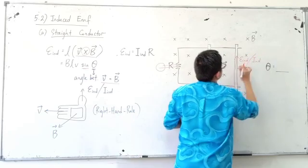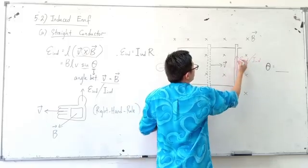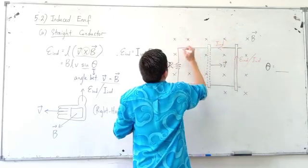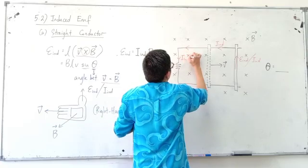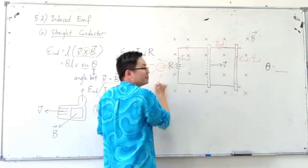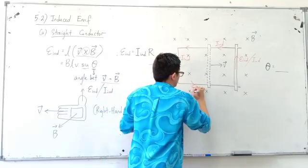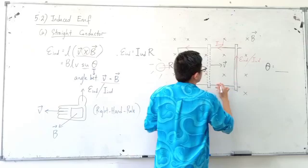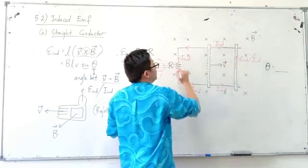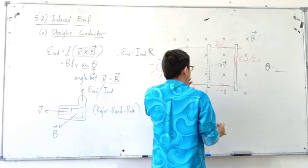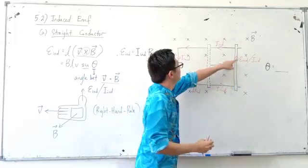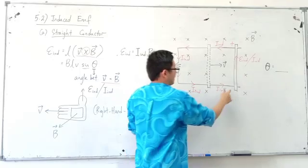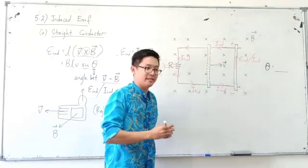The induced EMF is going upward. The current flows upward out from this end of the conductor, goes down through the LED — the LED lights up — and then enters the other end of the conductor. So the current flows anticlockwise. The current comes out from this end, making it the positive terminal, and enters the other end, making it the negative terminal.